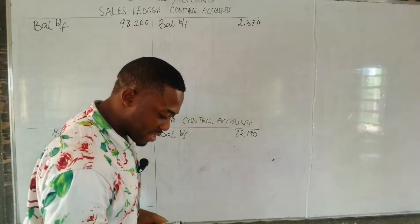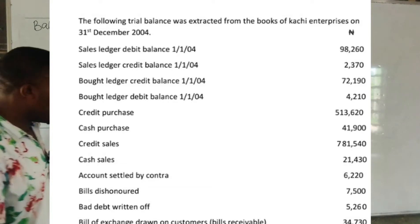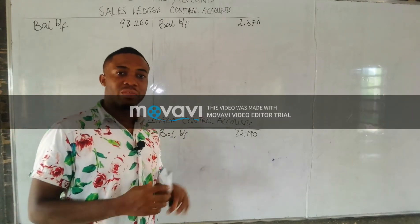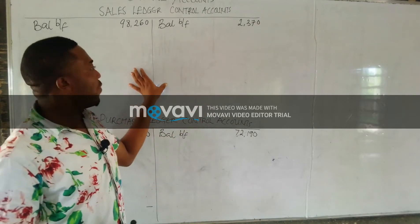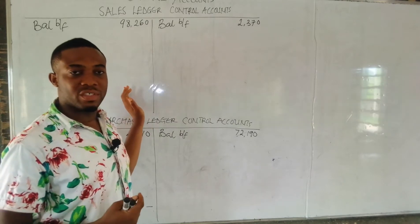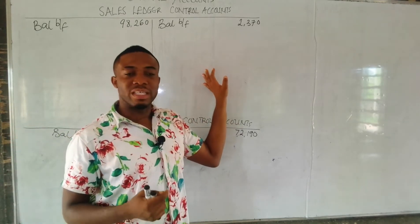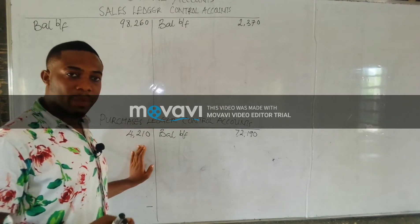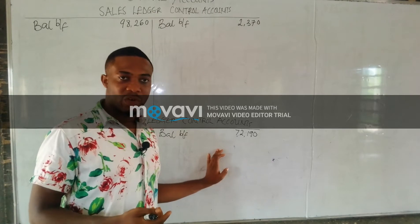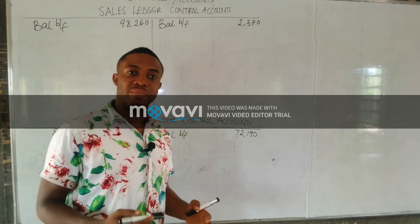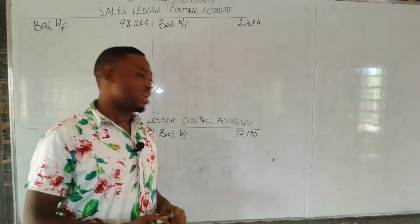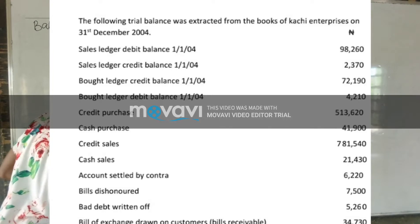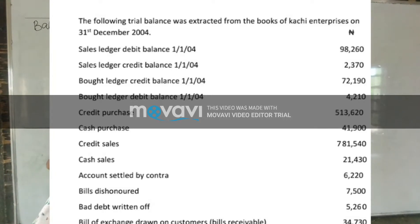The next item is credit purchases, which goes to the purchase ledger control account. Recalling the rules: the credit side of the purchase ledger contains what the supplier is giving out. Since it is a credit purchase, goods are going out from the supplier's side, so we post credit purchases of $513,620 to the credit side of the purchase ledger.